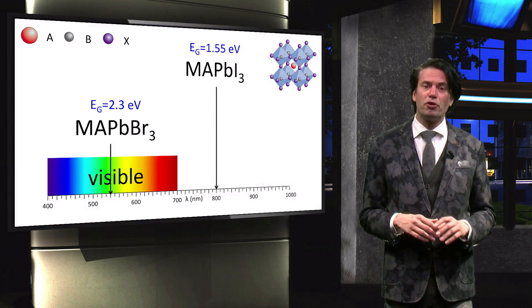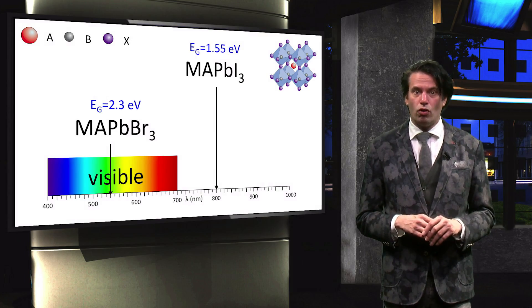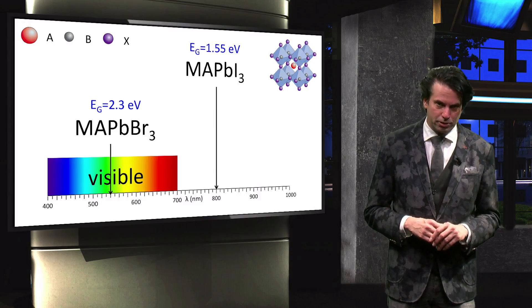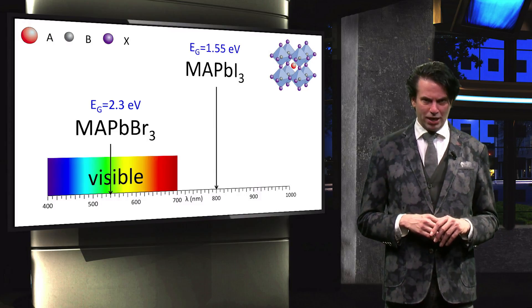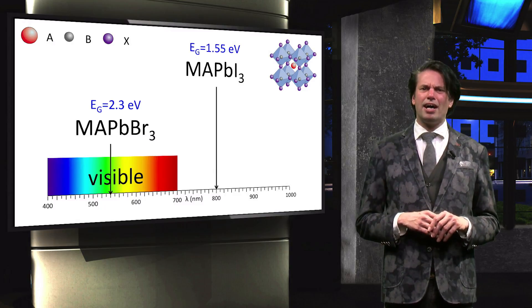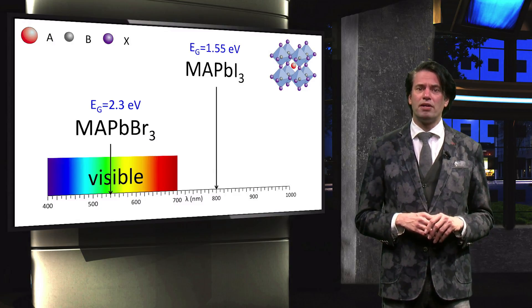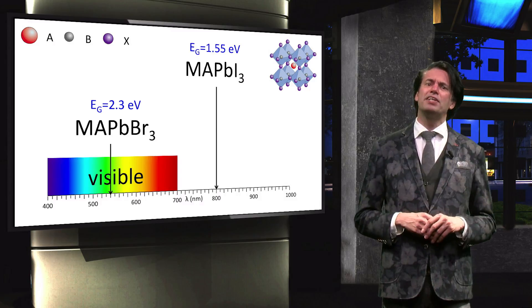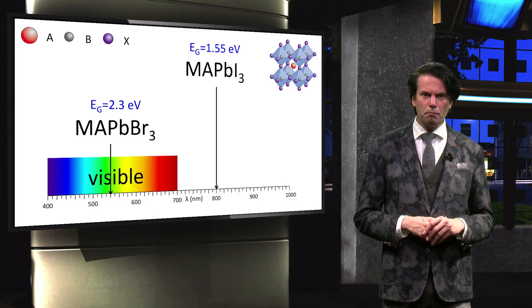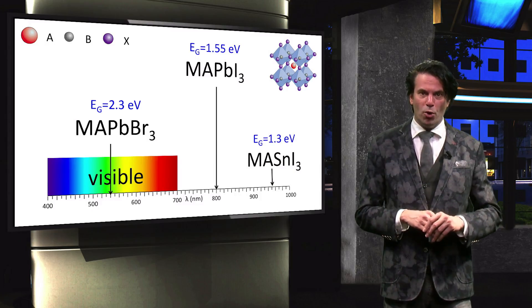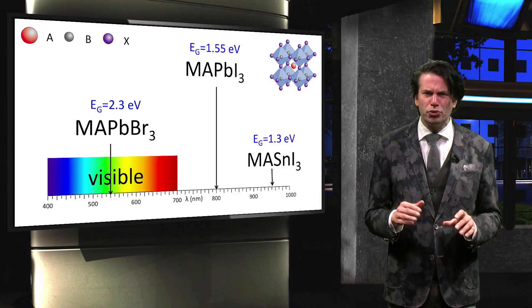It has a bandgap of 2.3 eV as a wavelength of 539 nm. In reference to the standard methyl ammonium lead iodide perovskite, the cation based on the four valence element, in this case lead, can be replaced by the four valence element like tin. The bandgap of methyl ammonium tin iodide shifts to the infrared. It has a bandgap of 1.3 eV or 954 nm expressed in wavelengths.